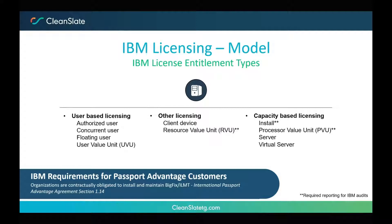IBM requires that if you're using subcapacity pricing, you must run IBM License Metric Tool or IBM BigFix Inventory to capture inventory of IBM products and auto-calculate consumption. These reports must be stored quarterly, and in a license review or audit you'll be required to generate them — this is in your IBM Passport Advantage Agreement under Section 1.14. If an audit occurs and the tool is not installed, you could face a compliance risk, so make sure to keep on top of it and get the tool installed.